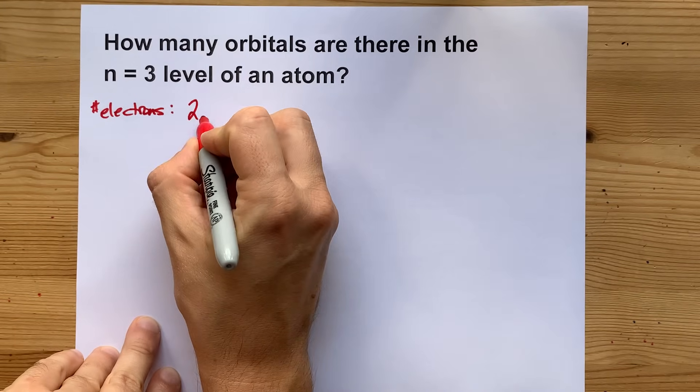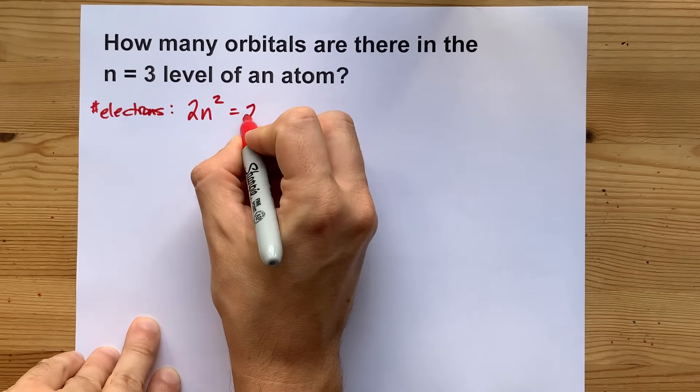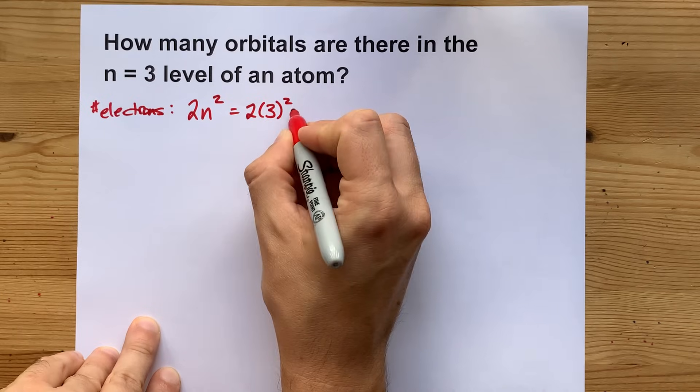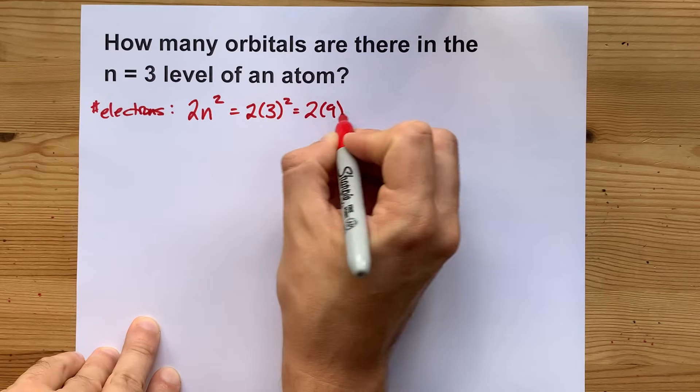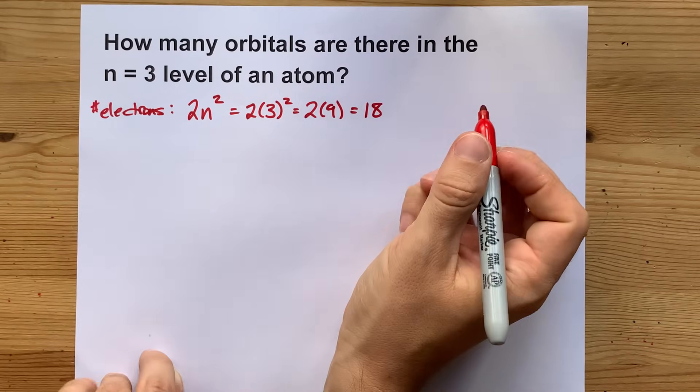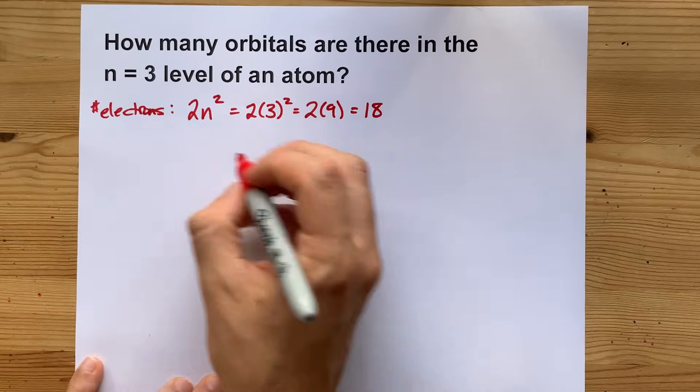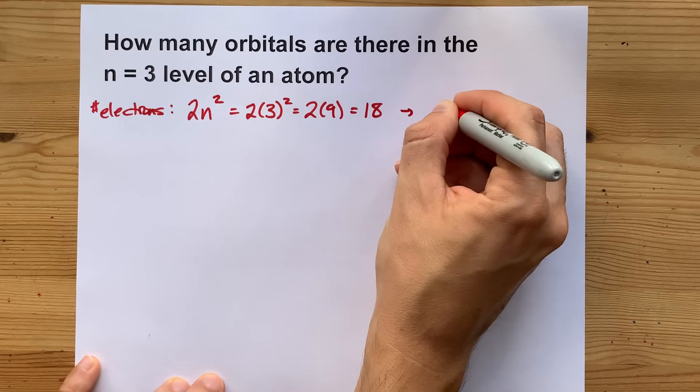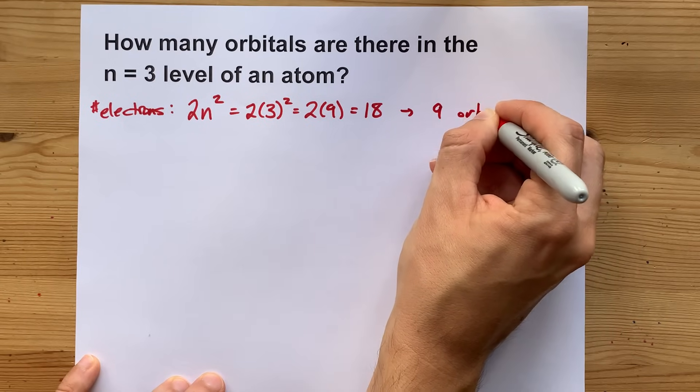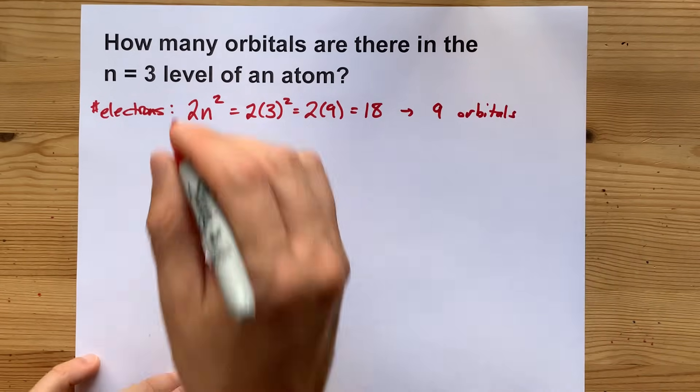The number of electrons is 2n squared, which for us is 2 times 3 squared, which is 2 times 9, so that's 18 electrons. And then knowing that there are two electrons per orbital, that tells us that there are nine orbitals inside n equals 3.